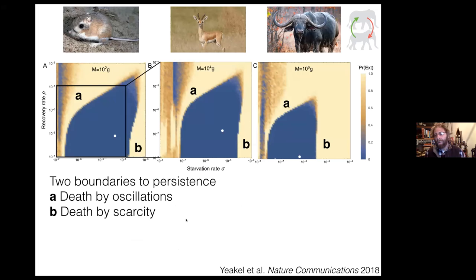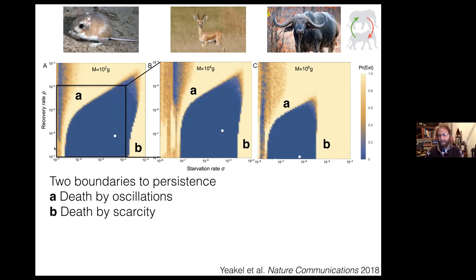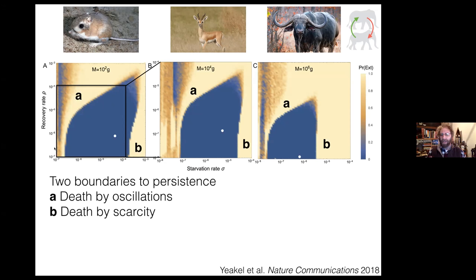We can get additional insight into extinction risk by allowing the starvation rate and the recovery rate to vary. We simulated the nutritional state structured model over time, applying perturbations and seeing when the system falls below some critical threshold — if it does, we deem it extinct. We can look at the probability of extinction as a function of starvation rate (x-axis) and recovery rate (y-axis). There are two regimes of extinction: blue is low probability, yellow is high probability. This is actually a saddle-node bifurcation, which we can solve for analytically.